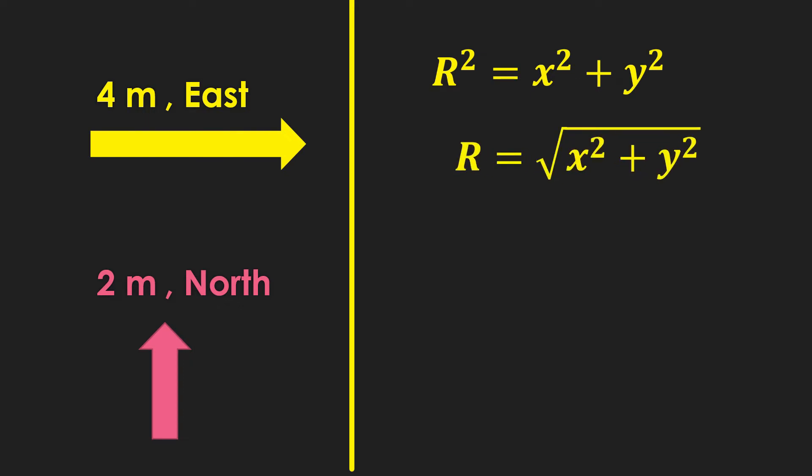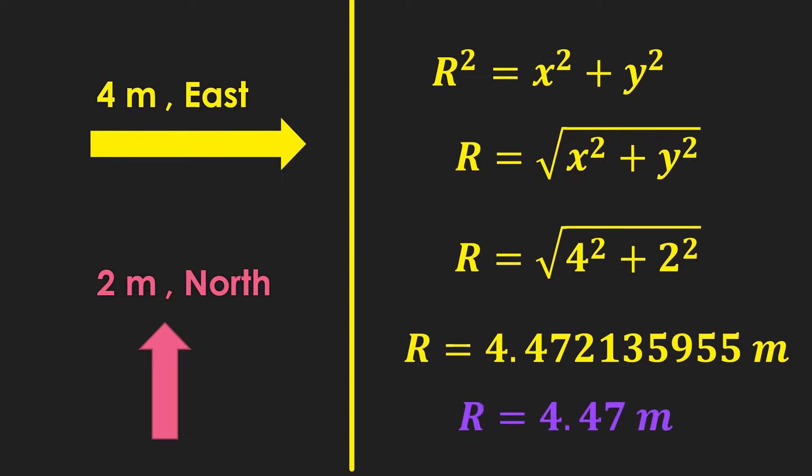We need to derive an equation for the resultant vector. So we apply square root on both sides of the equation. Next, we substitute the values. Now, I prefer three significant figures, so let's reduce the number. We arrive at 4.47 as our magnitude.